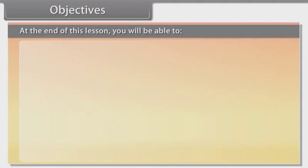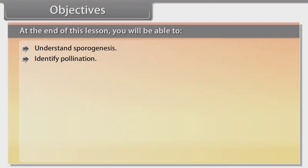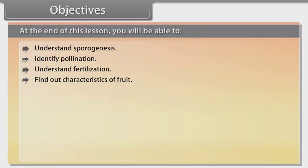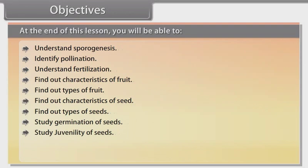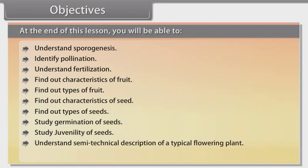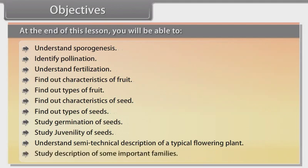At the end of this lesson you will be able to: understand sporogenesis; identify pollination; understand fertilization; find out characteristics of fruit; find out types of fruit; find out characteristics of seed; find out types of seeds; study germination of seeds; study juvenility of seeds; understand semi-technical description of a typical flowering plant; and study description of some important families.